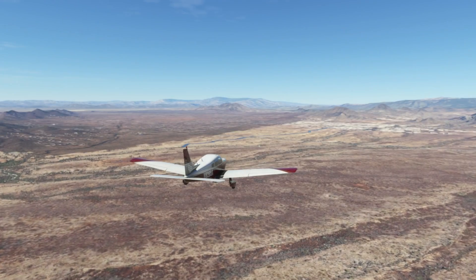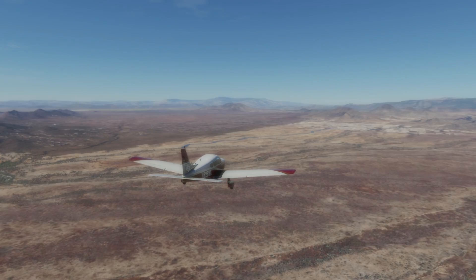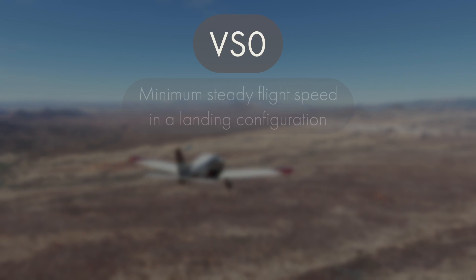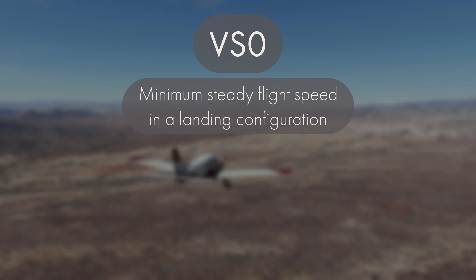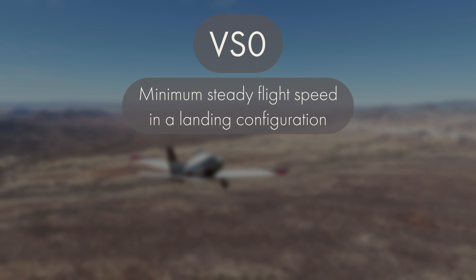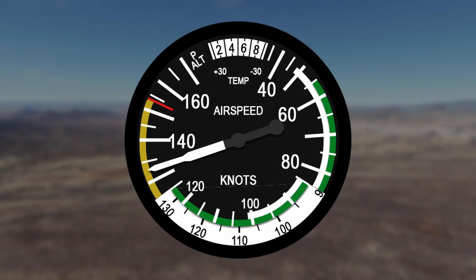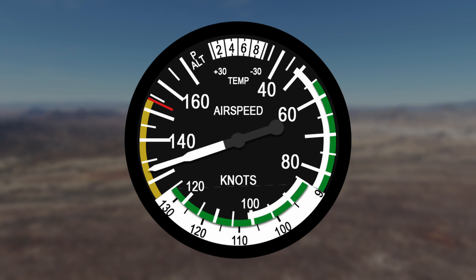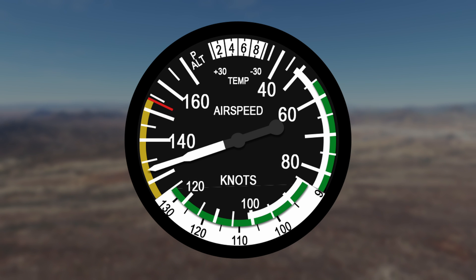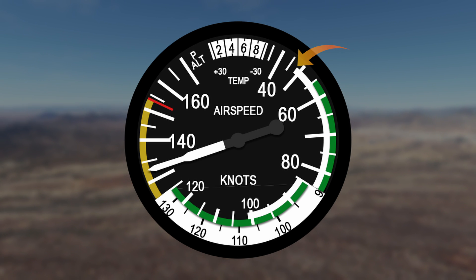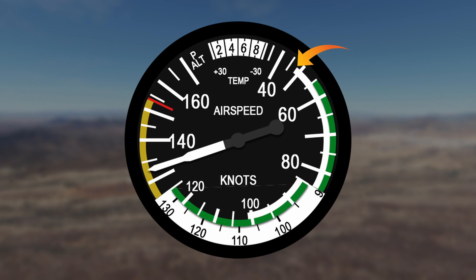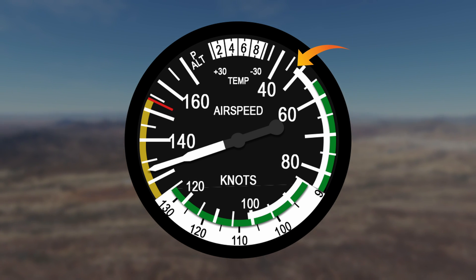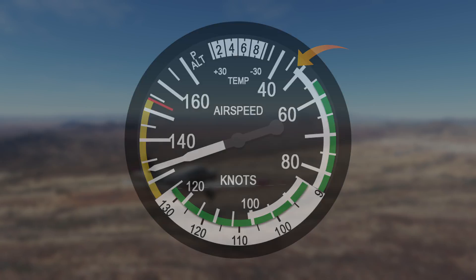The first one we're going to talk about is VSO, and this is the speed for minimum steady flight in a landing configuration. If we take a look at the airspeed indicator, the VSO speed is indicated by the bottom of the white arc, and in the Piper PA-28 it's 45 knots.